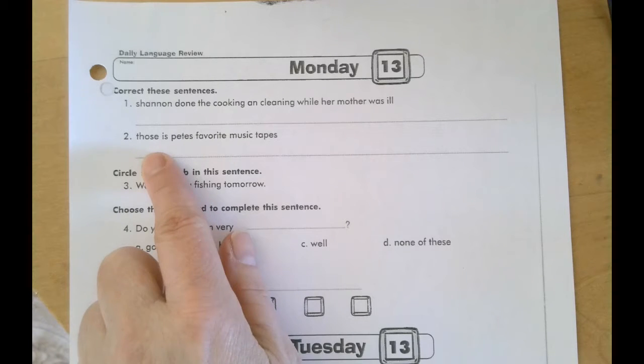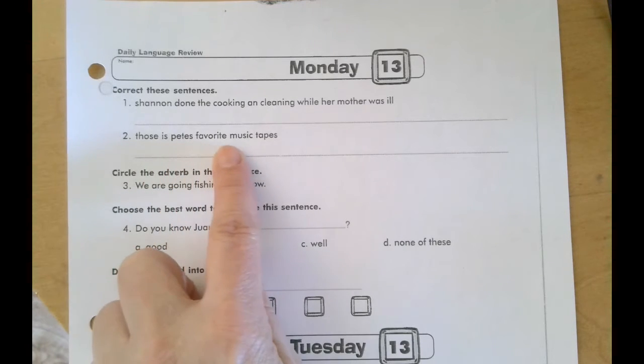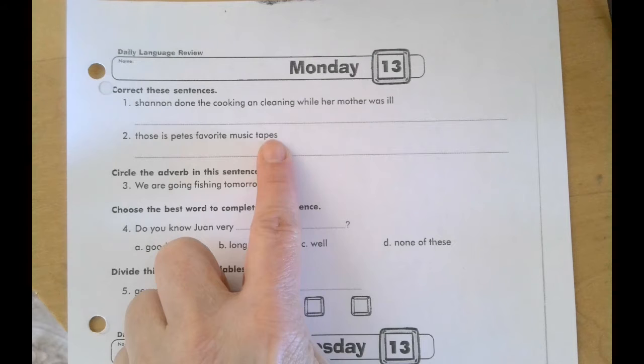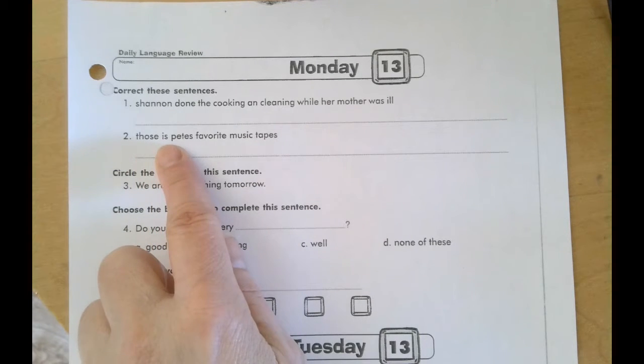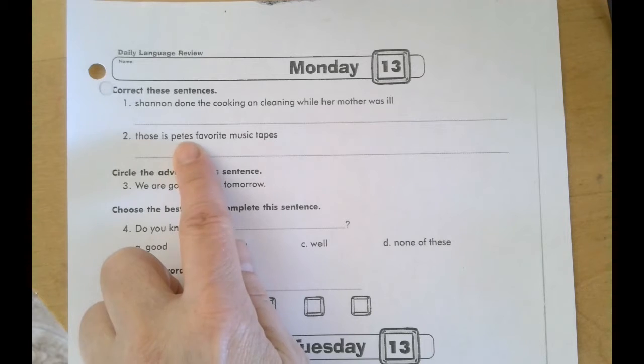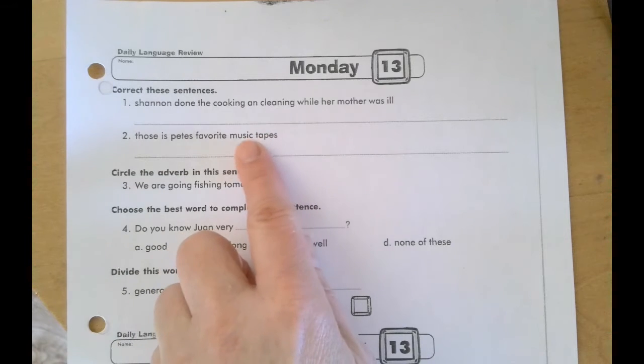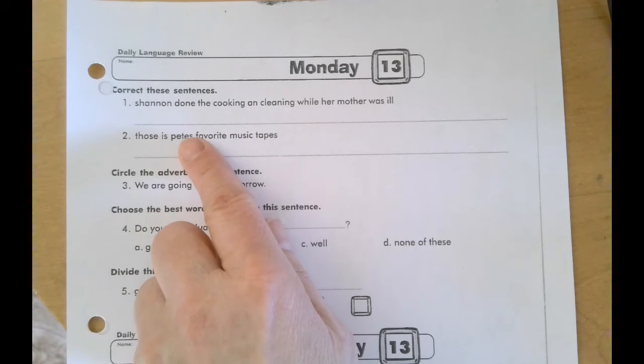Number two, those is Pete's favorite music tapes. So beginning of the sentence, need something, and then make sure this is the proper use of this verb. And Pete, this is a name. So what do you do to a name? And as well, something is belonging to Pete. So we need to show ownership by inserting something between the E and the S.